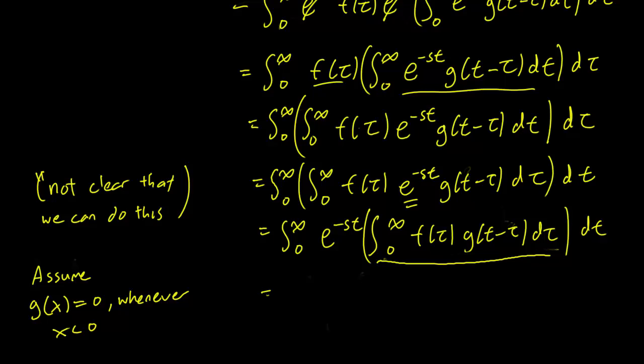So since we only define f and g for positive x, we can define the negative to be whatever we want. So let's just say that it's 0. But notice that if we say that g is 0 whenever the input is negative, whenever this integral exceeds t, the input of g is going to be negative, and so g is going to be 0. So we can just ignore every term in which the integral goes above t. So this is actually going to be equal to integral of 0 to t f(τ) g(t-τ) dτ dt.